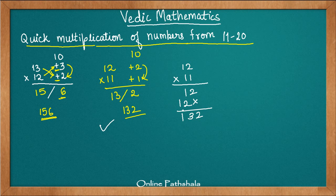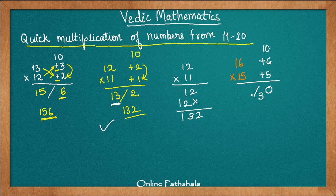Note that in both examples there was no carry. It can happen that multiplying the two surplus values gives more than one digit. We handle it the same way as in the first video — we carry over. For example, 16 multiplied by 15: base 10, plus 6 and plus 5. 6 times 5 is 30, so put 0 in the units place and carry the 3. Then 16 plus 5 is 21, and 21 plus 3 (the carry) is 24, giving the answer 240.